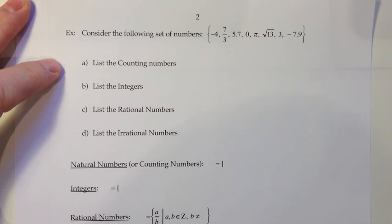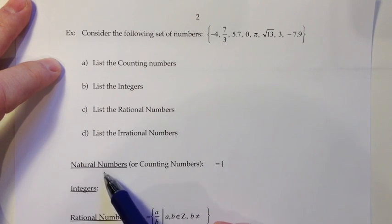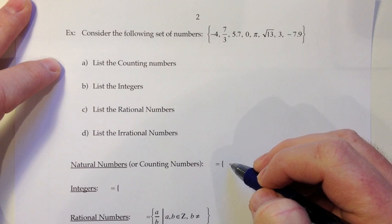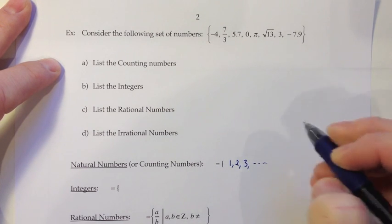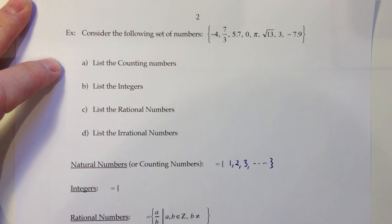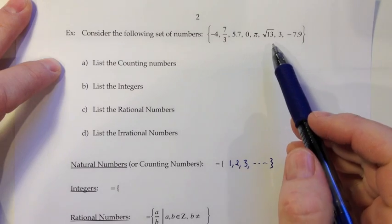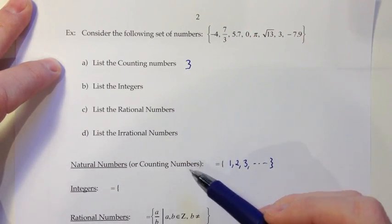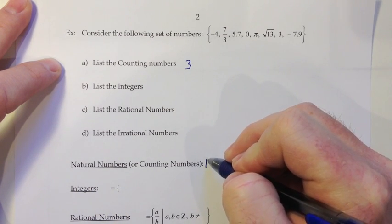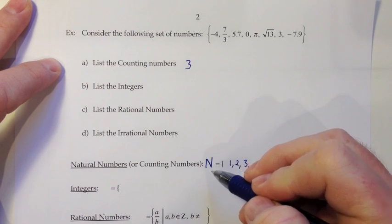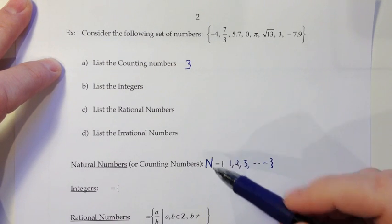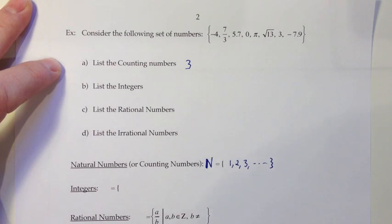Let's look at an example. Consider the following set of numbers: negative 4, 7 thirds, 5.7, 0, pi, the square root of 13, 3, and negative 7.9. List the counting numbers. So, let's define that before we start listing. The counting numbers is also referred to as the set of natural numbers, and that's actually a more common name for that in math. And it would be the list of numbers you would think of if you were counting up items. So, 1, 2, 3, etc. And, if we look back up at our list, the counting numbers, the only counting number that I see is the number 3. And then the counting numbers, or more commonly natural numbers, are listed with a capital N. And to make that N stand out from other Ns, what they do in a textbook or online is they show it as a bold N. When you're handwriting it, what we normally do is draw kind of an extra line on that first vertical bar.